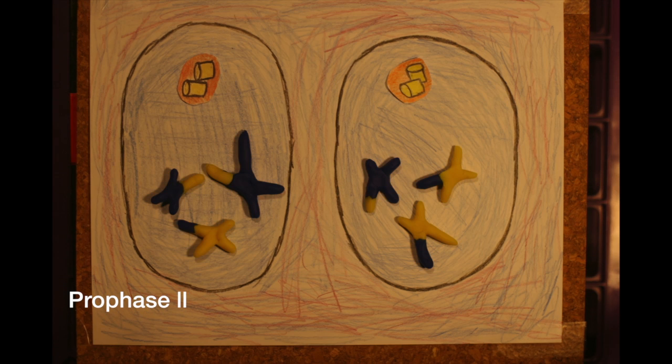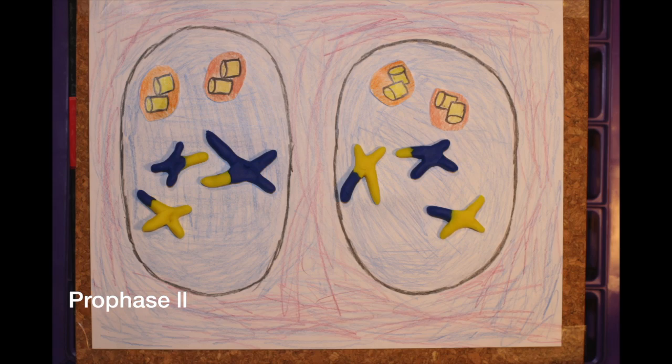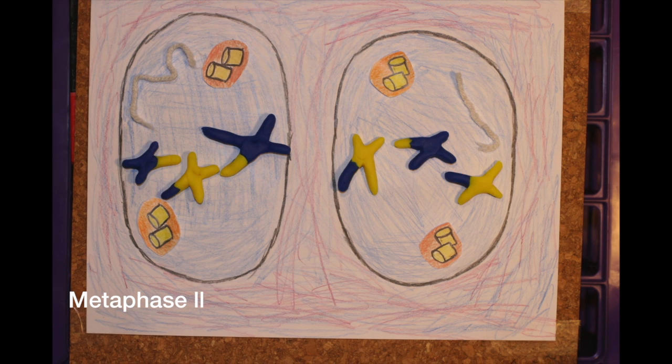Prophase two initiates, where the centrosomes replicate and the nuclear envelope breaks down. During metaphase two, the chromosomes line up once again on the equatorial plate.